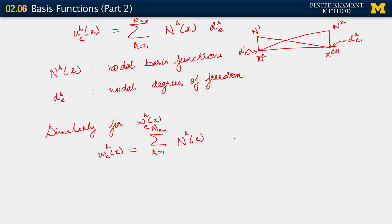Now the degrees of freedom for the weighting function will be obviously different from the degrees of freedom for the trial solution. These are different functions. So though we're using the same basis functions for the weighting function and the trial solution, we have to use different degrees of freedom. We have C^a_e, where in this case this is the degree of freedom for the weighting function.